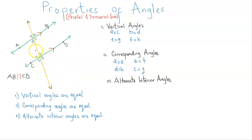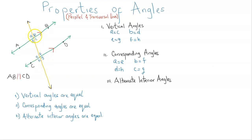Two angles are alternate if they are within two parallel lines on opposite sides of the transversal — one at the top intersection and the other at the bottom. Looking at that, the angles A, B, G, and H do not qualify, because A and B are at the top while G and H are at the bottom of the parallel lines. So we are left with just these four angles: C, D, E, and F.